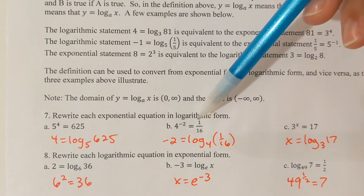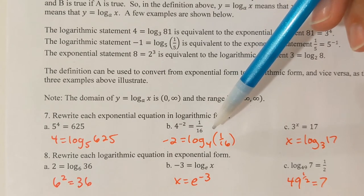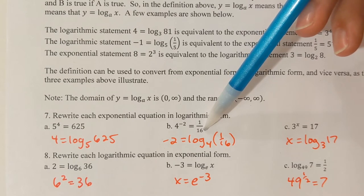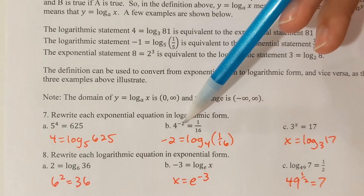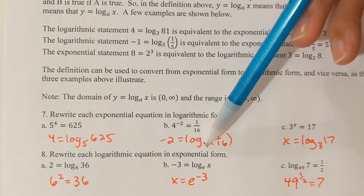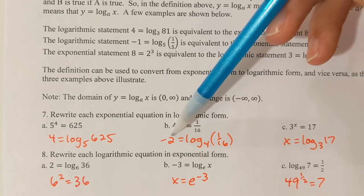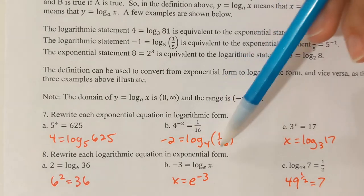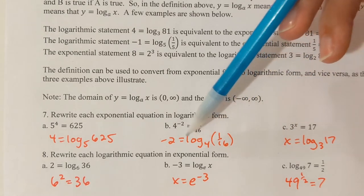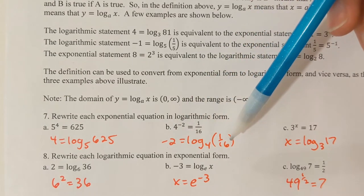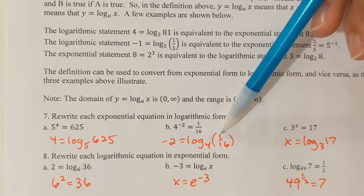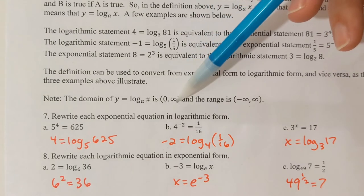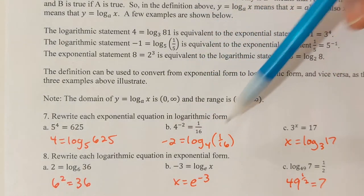Here's another one. 4⁻² = 1/16. What does that look like in logarithmic form? x is 1/16, so that goes inside the logarithm. y is negative two. The base is four, so four becomes the base of the logarithm. So: -2 = log_4(1/16) is the equivalent logarithmic form. Notice how we can have a negative coming out of the calculation, just not going into it. 1/16, 625, 1/5, 81 — these are all positive numbers going inside the logarithm.